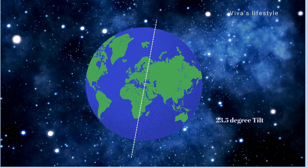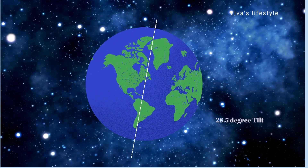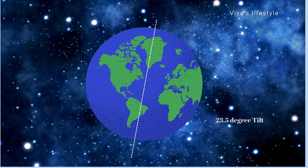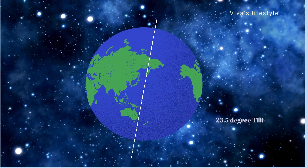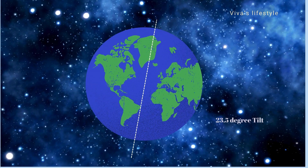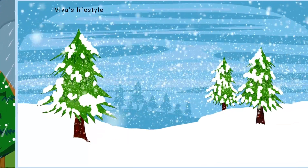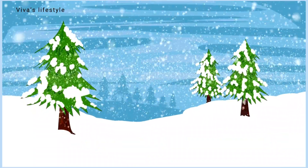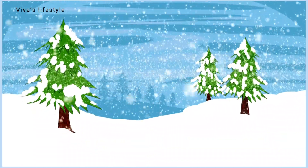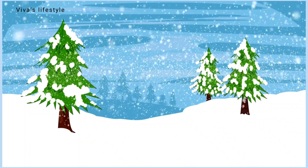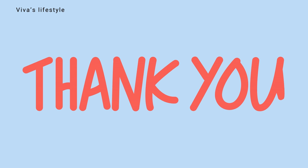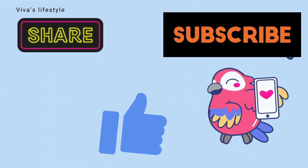Earth's rotation around its axis is tilted by 23.5 degrees, and this tilted axis generates the seasons on Earth. We hope you learned about the water cycle. Thanks very much for watching this video. Please like, share, and subscribe.